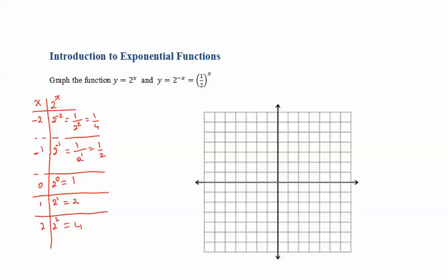I will plot these points. When x is negative 2, y is a quarter. When x is negative 1, we have a half. When x is 0, it's 1. When x is 1, it's 2 to the power of 1, which is 2. When x is 2, we have 4. Then we connect these points and we have this exponential function with base 2, 2 to the x.